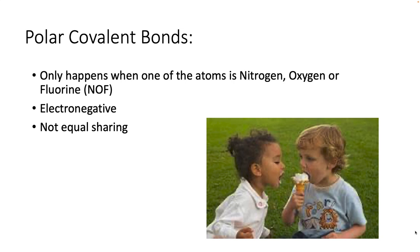And so what would happen is she would take one, two, three, four licks for every lick that he got. So were they sharing the ice cream cone? Technically, yes, they were sharing the ice cream cone, but it certainly wasn't equal sharing. So when you think of polar covalent bonds, it's when the electrons are not equally shared, and it's basically because one of the atoms is hogging up all the electrons.